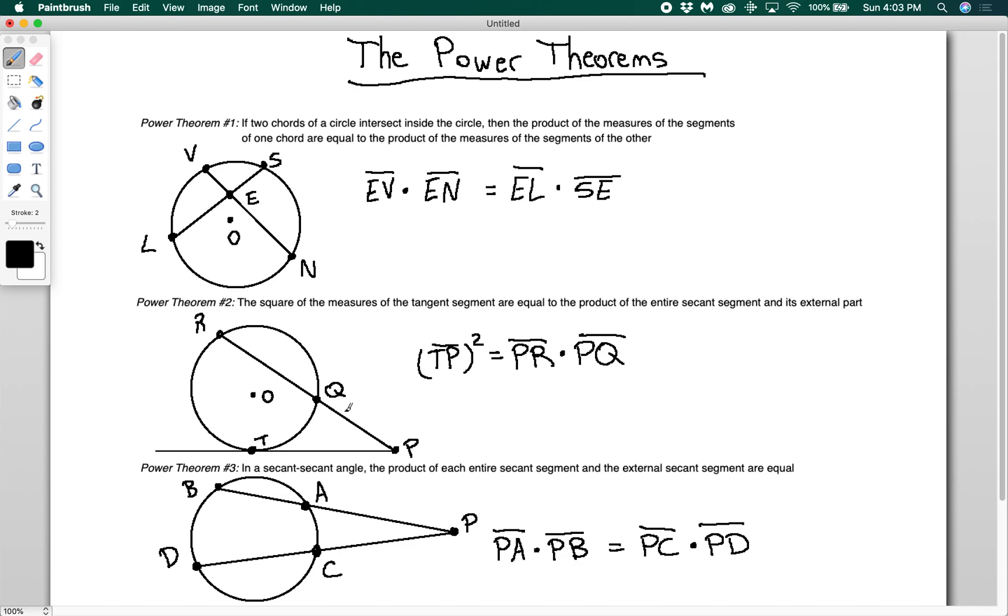The final power theorem is in a secant-secant angle, the product of each entire secant segment and the external secant segment are equal. That means if I take BP—I'm doing the thing I just told you not to do—BP times AP is going to equal PC times PD.